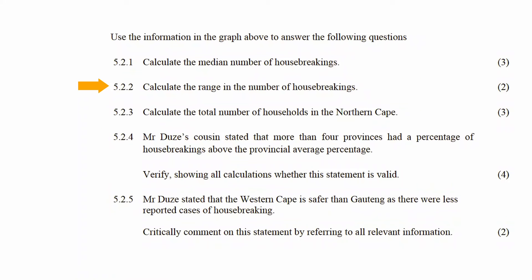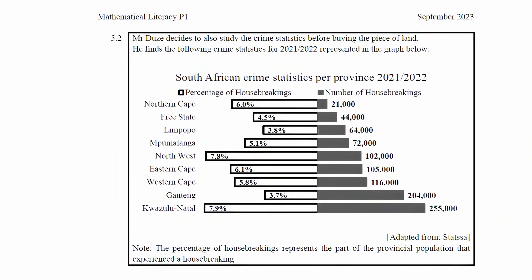In question 5.2.2, you have to calculate the range in the number of house break-ins. The range is a measure of spread and it is calculated by finding the difference between the largest value in the data set and the smallest value in the data set.